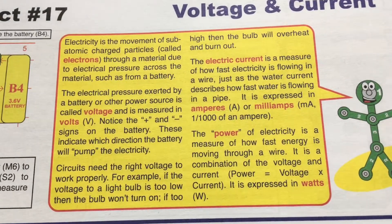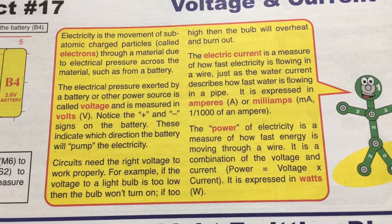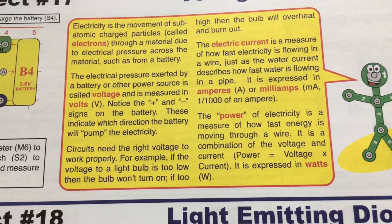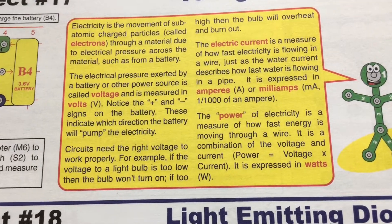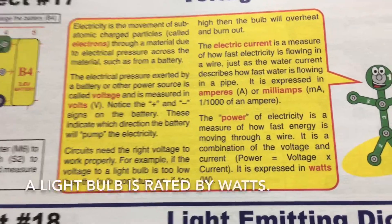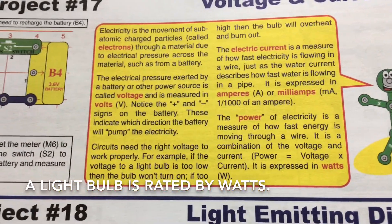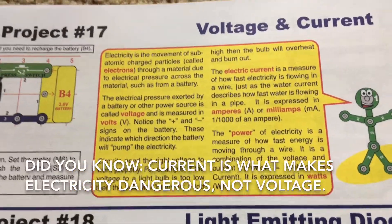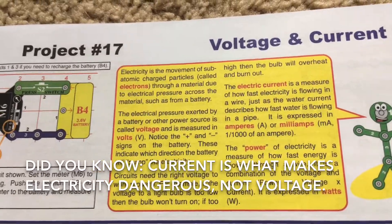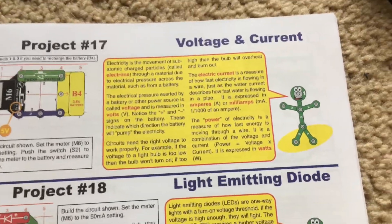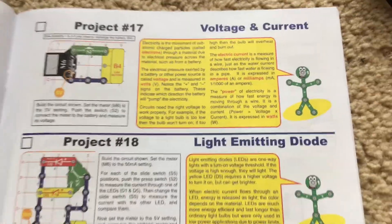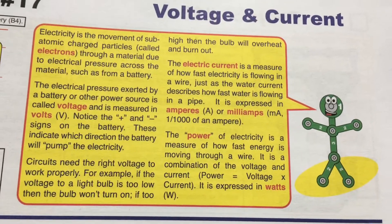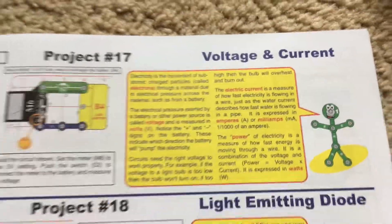Lastly, power measures how fast energy is moving through a wire. You can calculate power by multiplying the voltage times the current, and that is measured in watts. You probably have seen the number of watts on a light bulb, what it is rated. What's interesting about electricity is that it can be dangerous, of course, but did you know it's the current that is dangerous, not the voltage? The current is what kills you, or seriously injures you, not the voltage. Because the faster electricity is flowing through a wire, then the more dangerous it is.